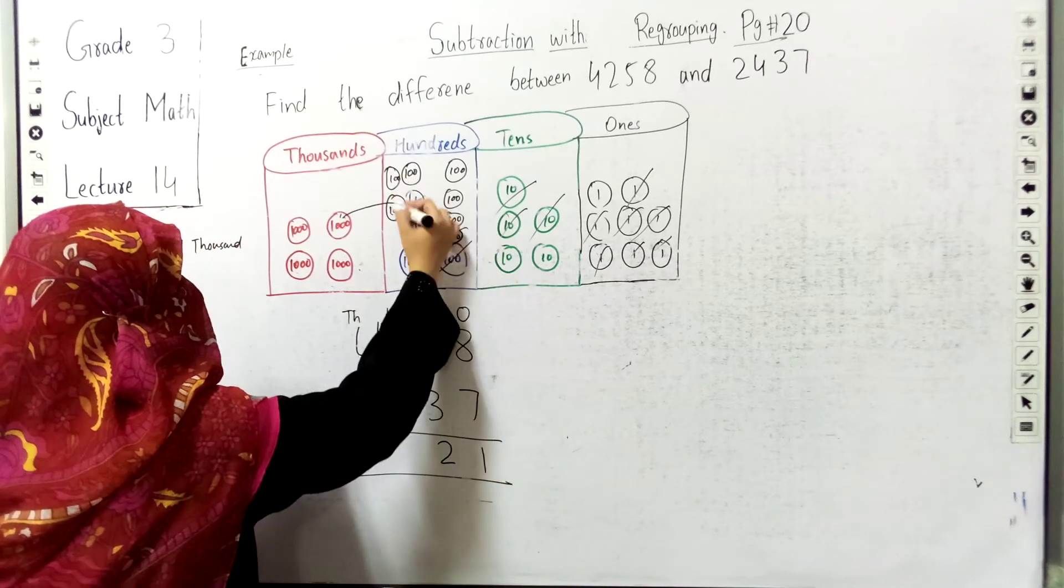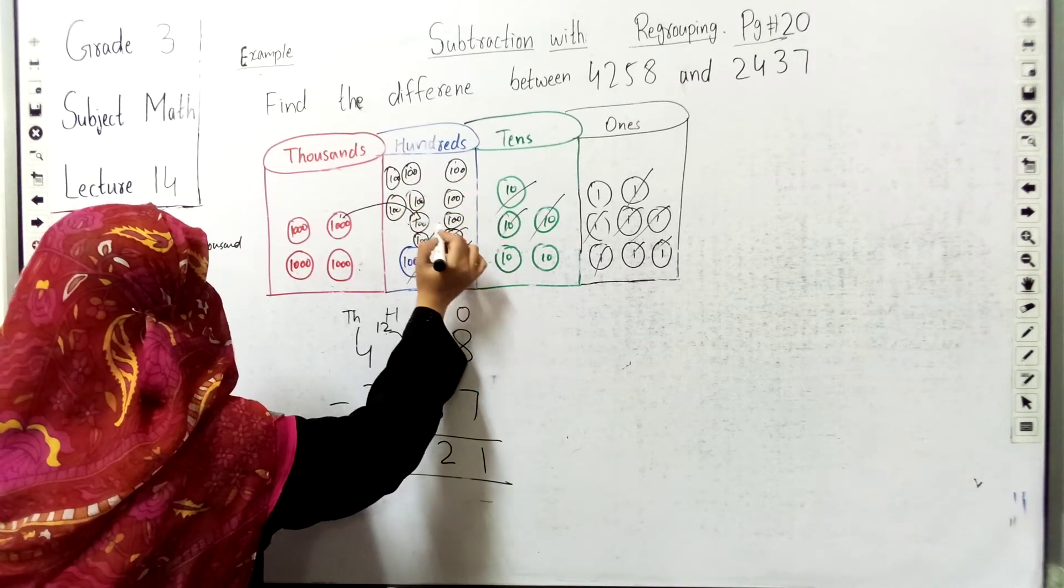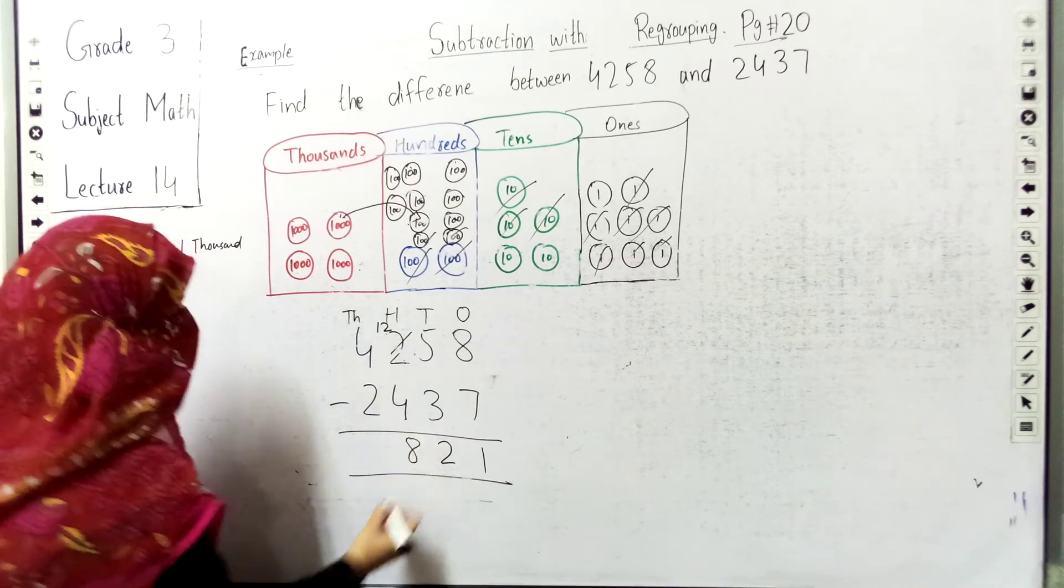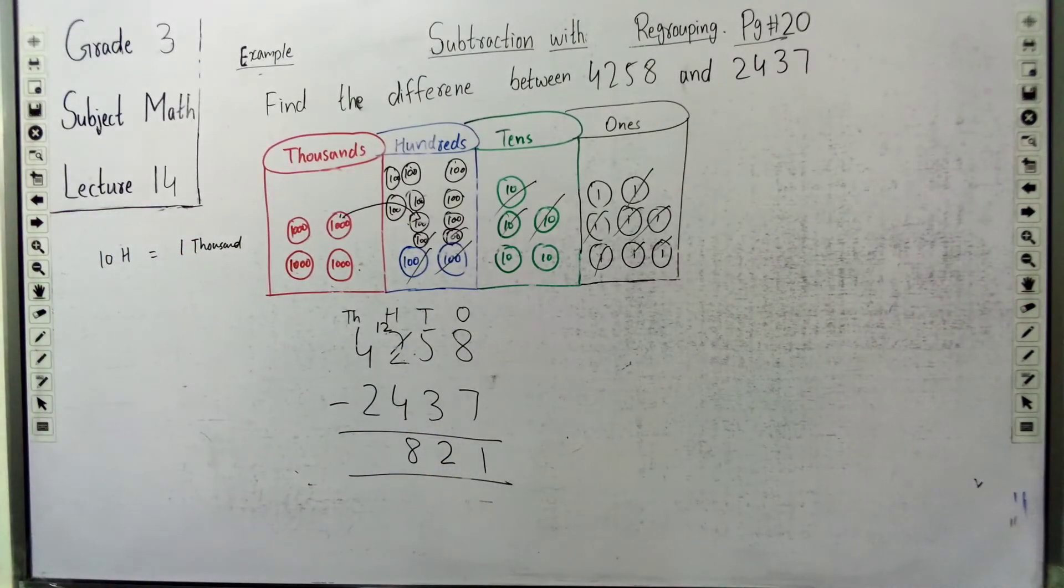So how many blocks remain? One, two, three, four, five, six, seven, eight. So we have eight blocks of hundred remaining.